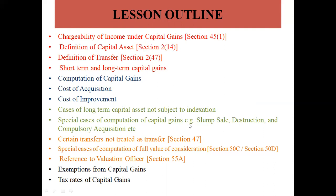Special cases of computation of capital gains — slump sale, destruction, and compulsory acquisition — will be discussed in part 3. Certain transfers not treated as transfer under section 47, and special cases of computation of full value of consideration — section 50C, section 50D, and reference to valuation officer under section 55A — will be discussed in part 4. Exemptions from capital gains and tax rates of capital gains will be discussed in part 5. This topic will be covered in 5 lectures.